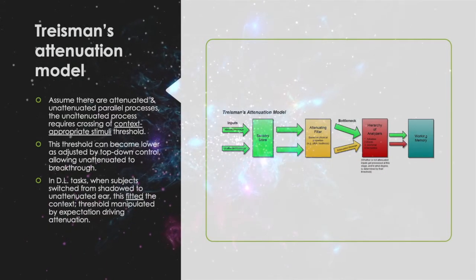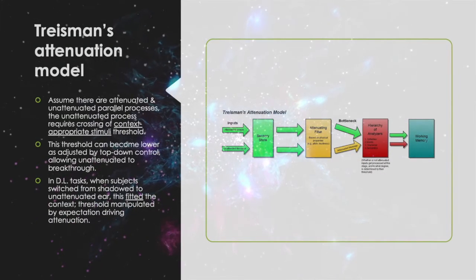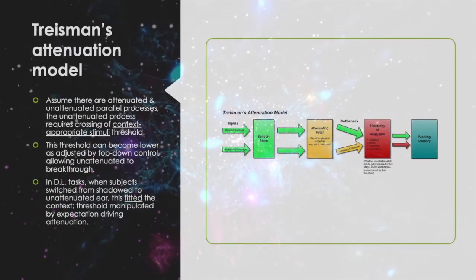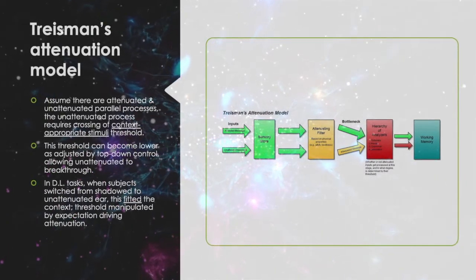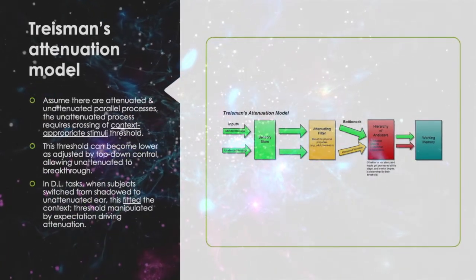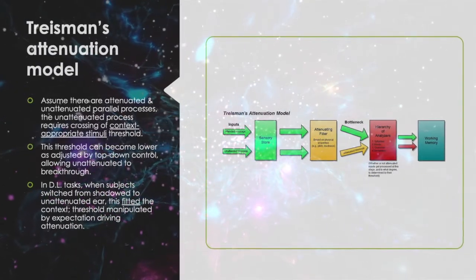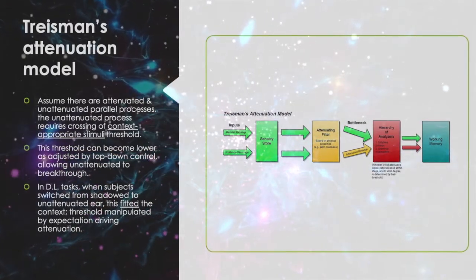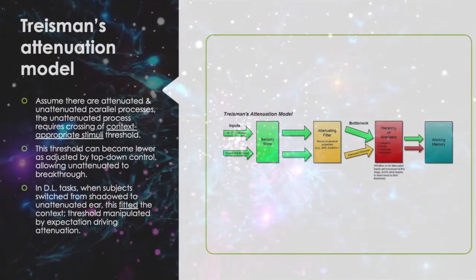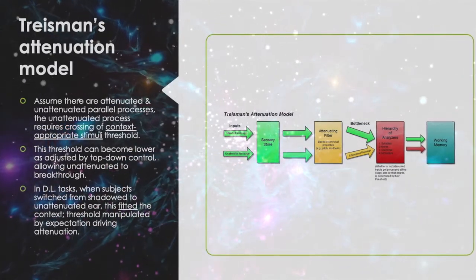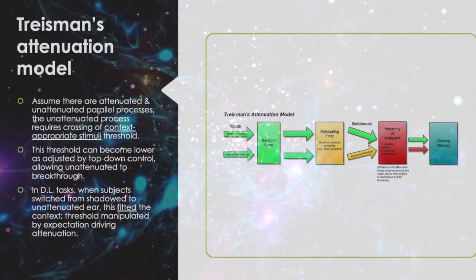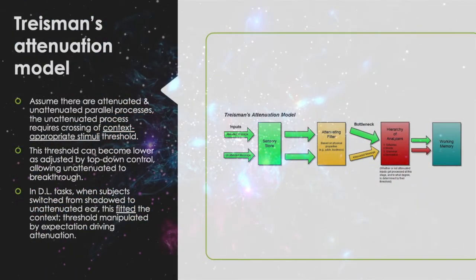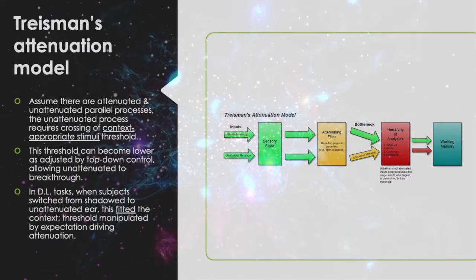Treisman's attenuation model assumes that there are attenuated and unattenuated parallel processes, and that the unattenuated processes require crossing of context-appropriate stimuli thresholds. These thresholds can become lower as adjusted by top-down control, allowing for the unattenuated signal to break through. Basically, there is an all-or-none filter. In dichotic listening tasks, when subjects switched from the shadowed to the unattended ear, this fitted the context, and the threshold was manipulated by expectation, which drove attenuation.